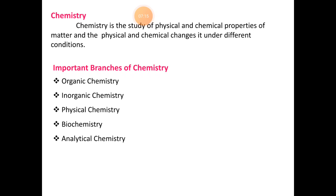Then analytical chemistry: all the instruments we use, different setups, the machineries we use — all of that we study in analytical chemistry. These are the main branches of chemistry: organic chemistry, inorganic chemistry, physical chemistry, biochemistry, and analytical chemistry.